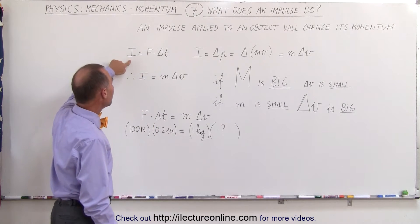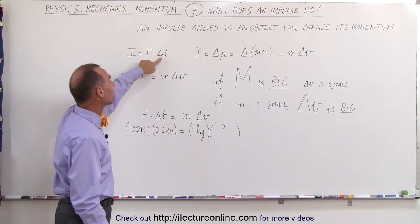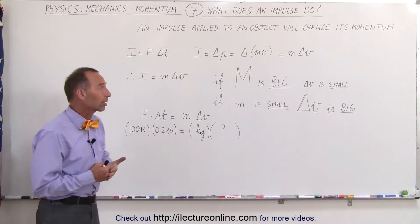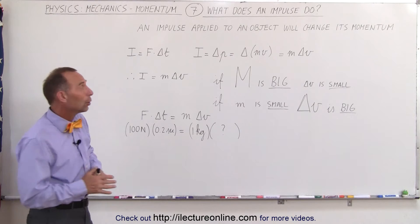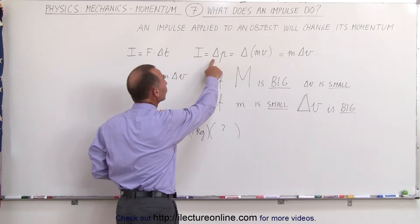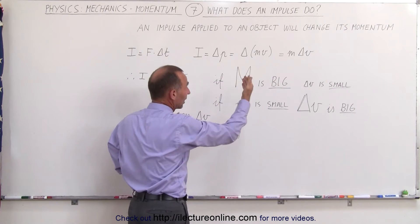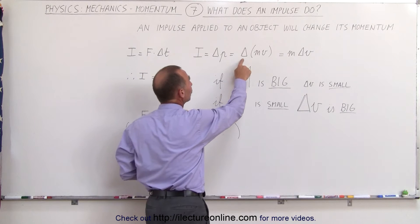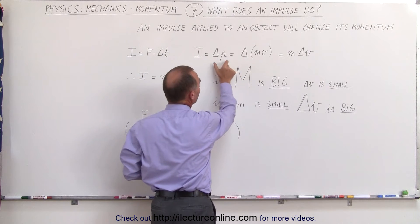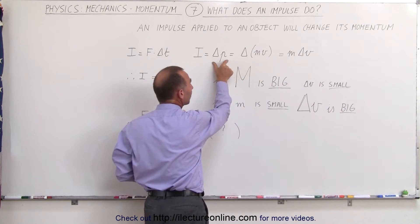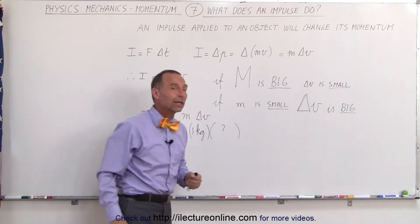The equation tells us that the impulse is equal to the force times the amount of time the force acts on the object. We also know that the impulse changes the momentum of the object on which it acts, and therefore it changes m times v. Remember the equation that defines momentum is mass times velocity.